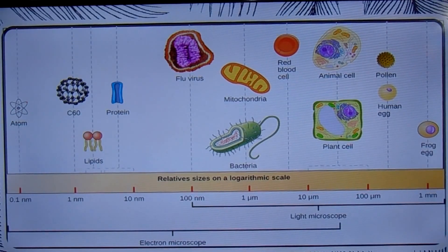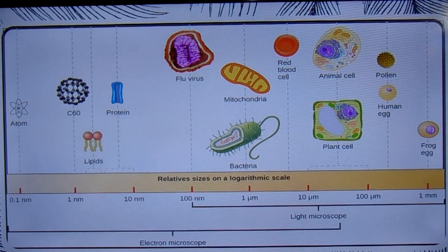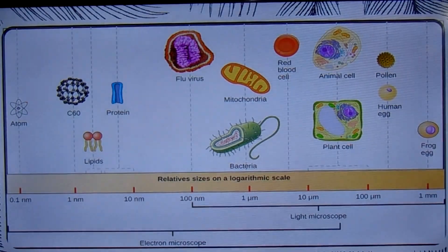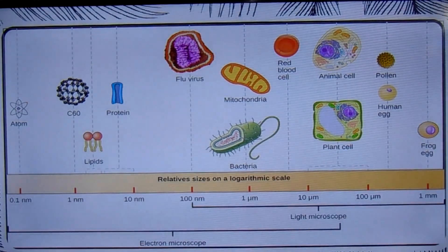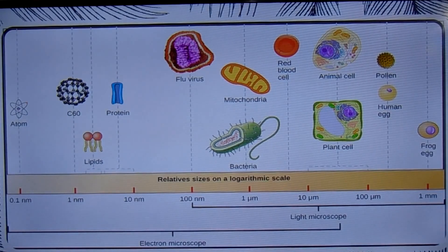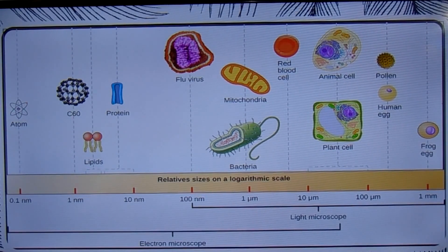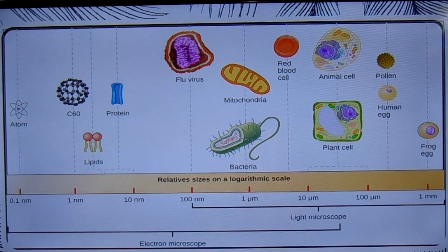In a multicellular organism there is a division of labor among the cells, allowing some cells to become specialized to an extreme degree for particular tasks and leaving them dependent on their fellow cells for many basic requirements. Even the most basic need — passing on genetic instructions to the next generation — is delegated to specialists: the egg and sperm.